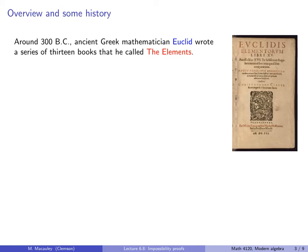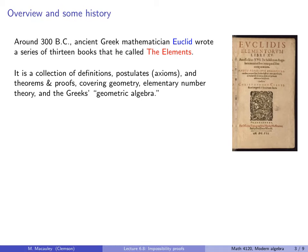Around 300 BC, the ancient Greek mathematician Euclid wrote a series of 13 books that he called the Elements. This is a collection of definitions, postulates or axioms, and theorems and proofs covering geometry, elementary number theory, and the Greek's geometric algebra. You may notice that the term Euclidean geometry is named after Euclid. Book 1 contained Euclid's famous ten postulates and other basic propositions of geometry.